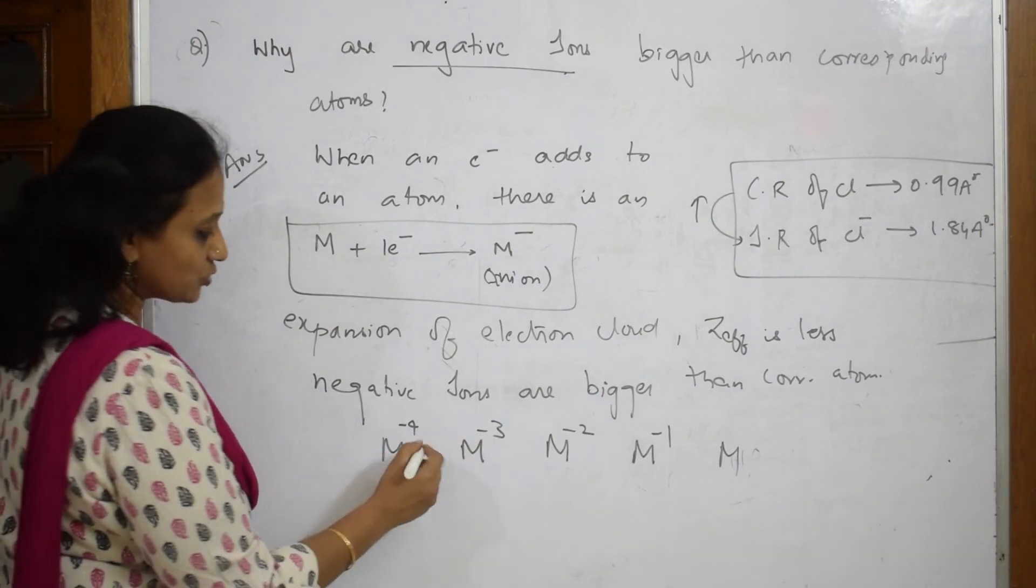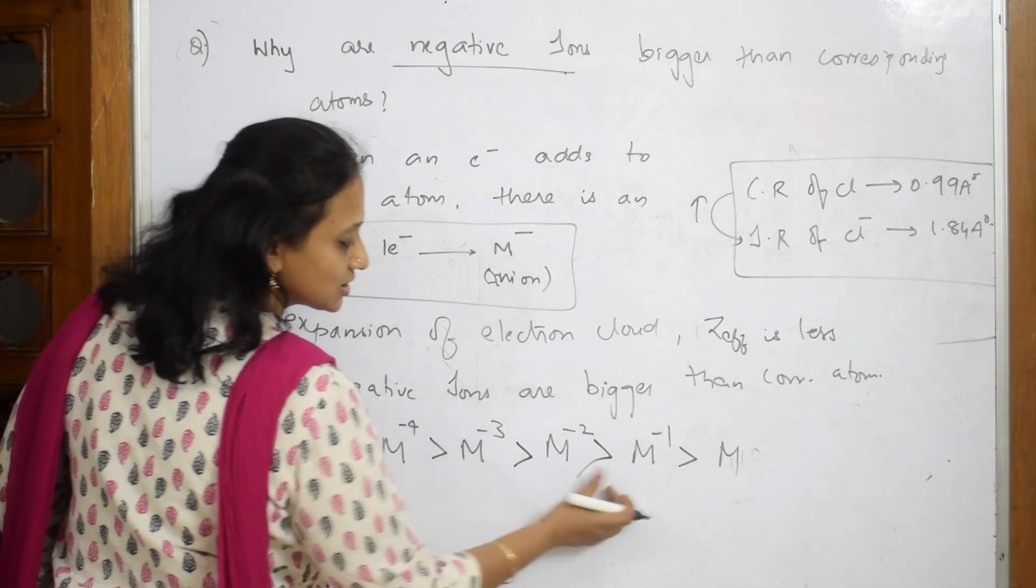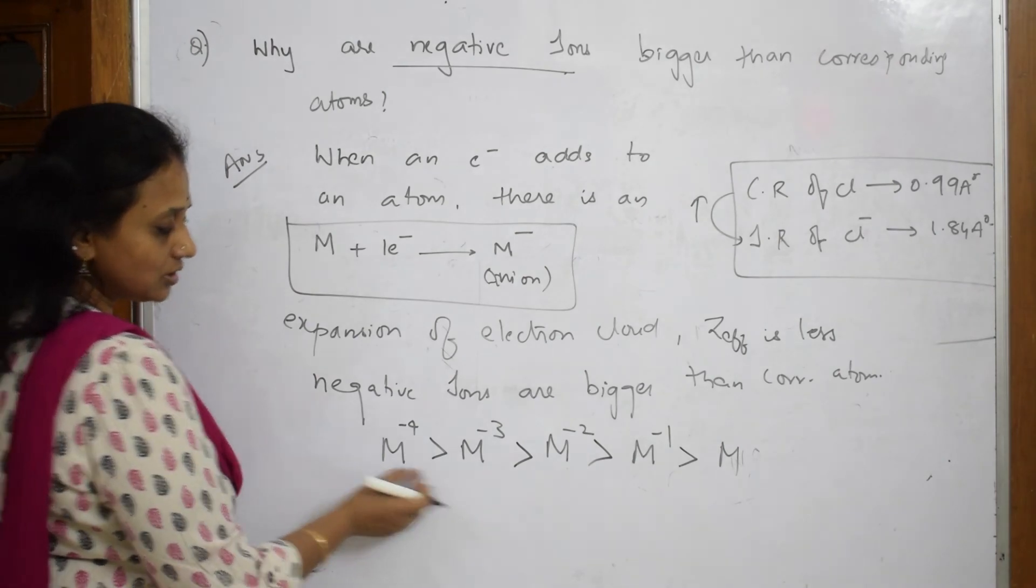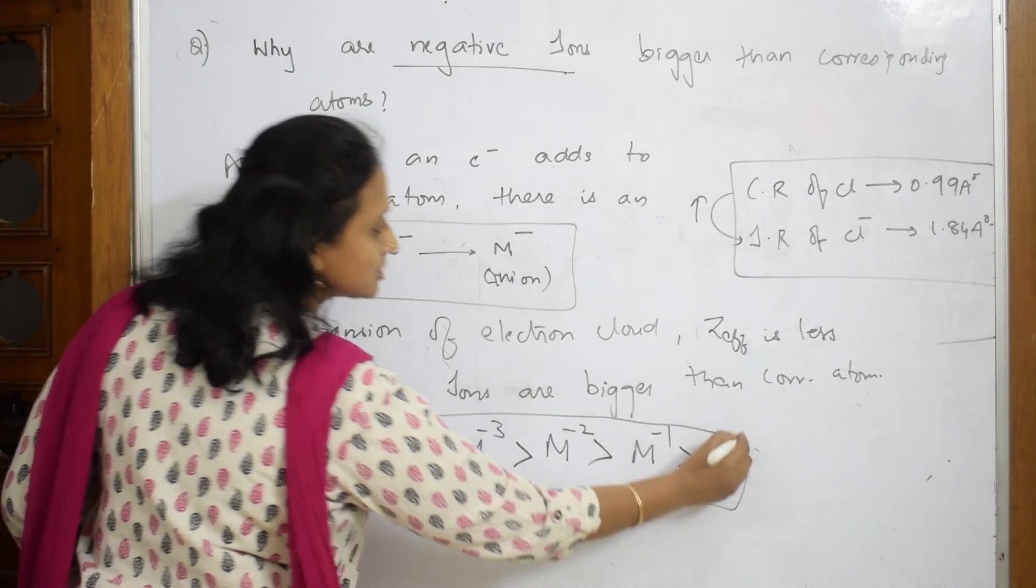So the radii will be more. This is greater, this is greater, this is greater. So this is how it shows the anion has a larger radii than its corresponding atom. Why? This is the reason.